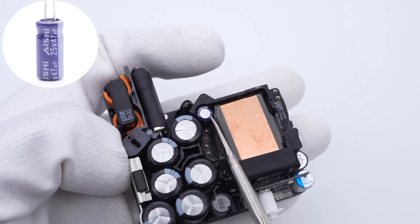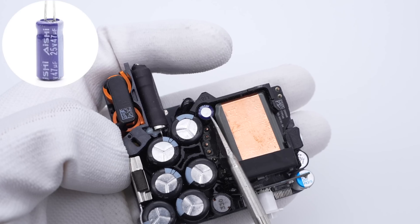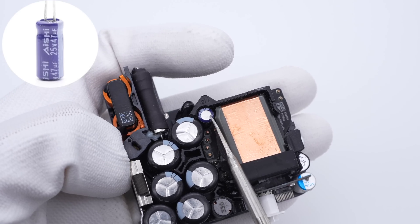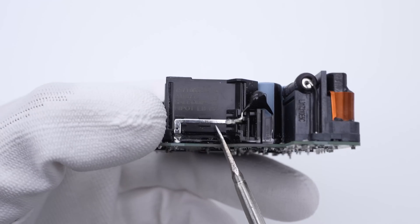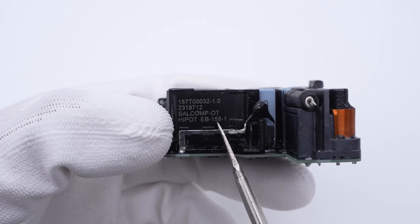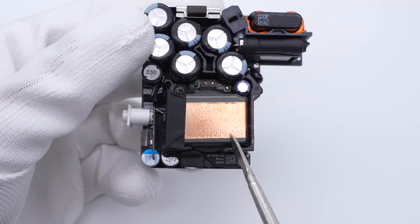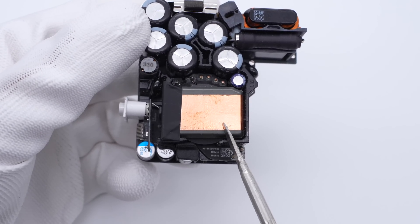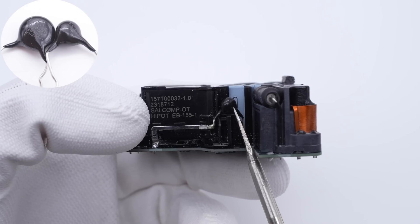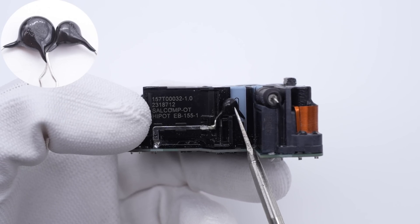This electrolytic capacitor powers the main control chip. It's from Nichicon and is 25V, 47μF. Unlike most chargers, the planar transformer is also black and is manufactured by Salcomp. The magnetic core is wrapped with copper foil for shielding. Two Y capacitors are soldered on both sides of the transformer.